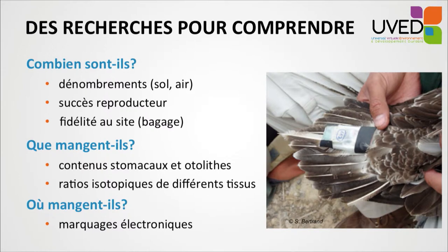We need to understand what the birds feed on. There are two methods: either we look directly in the stomach content based on the little balls they spit out — in these balls we can find otolith fragments from fishes, which have a specific shape allowing us to identify which fishes were eaten. We can also use blood or feather samples to find the isotopic ratio of compounds such as carbon, nitrogen, and mercury, to understand feeding habits over the last few weeks.